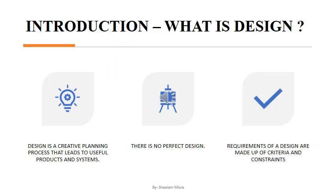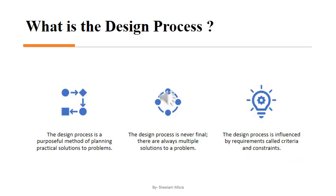What is design exactly? Design is a creative planning process that leads to useful products and systems. There is no perfect design. Requirements of a design are made up of criteria and constraints. The design process is a purposeful method of planning practical solutions to problems. The design process is never final. There are always multiple solutions to a problem, and the design process is influenced by requirements called criteria and constraints.